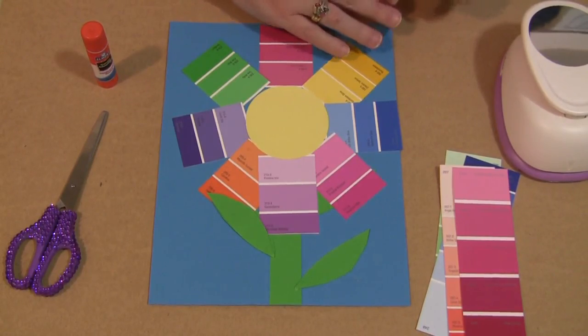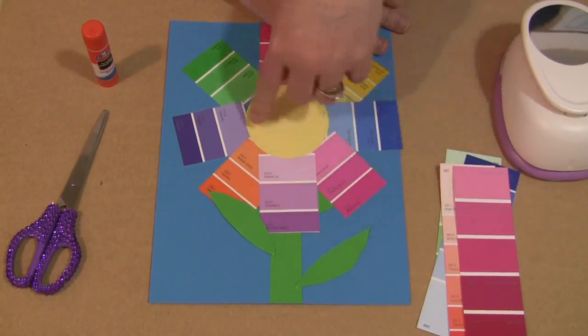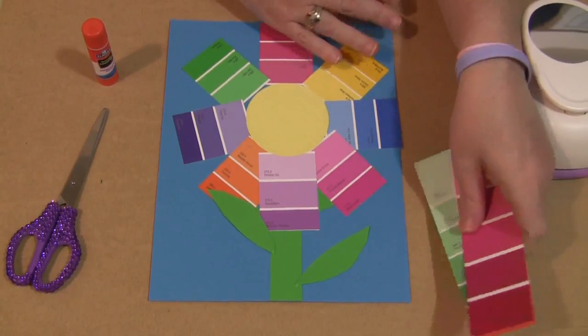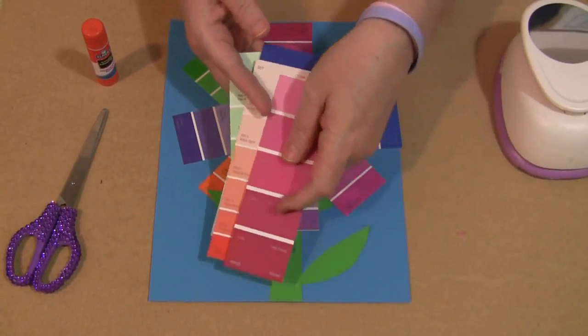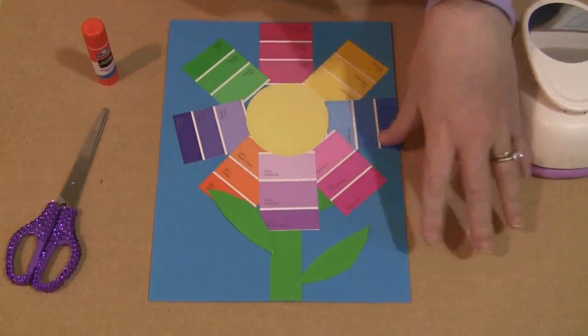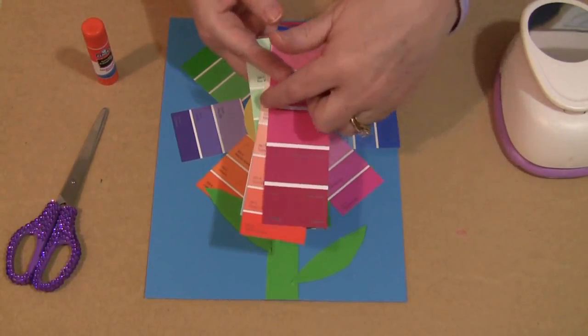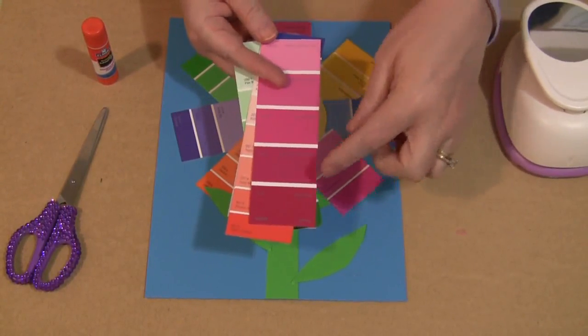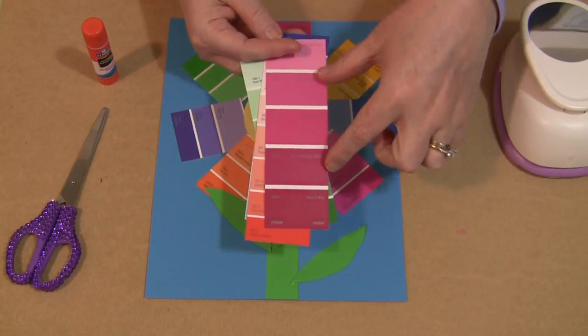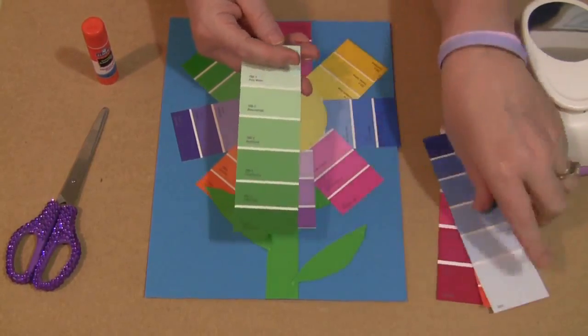And then what they did was they made a stem and some leaves and then they punched out their yellow circle for the center of the flower. And then they picked their paint strips. They chose whatever colors they wanted to do. And we had them count up to three because we thought with the paper width, that was the perfect size for the petals of the flower. And so they were told to cut, they cut on a line, count up three or choose three and then cut on the white lines. And so that's what they did. And then they glued it on.